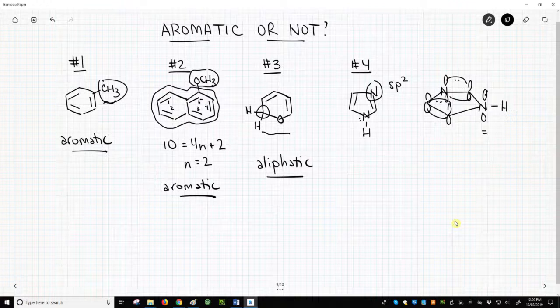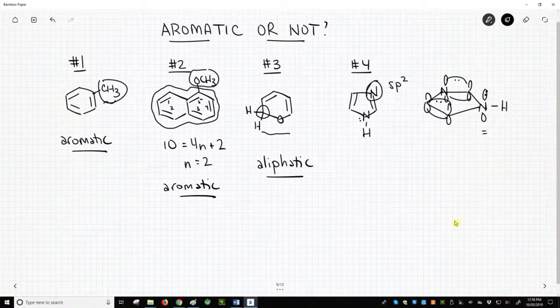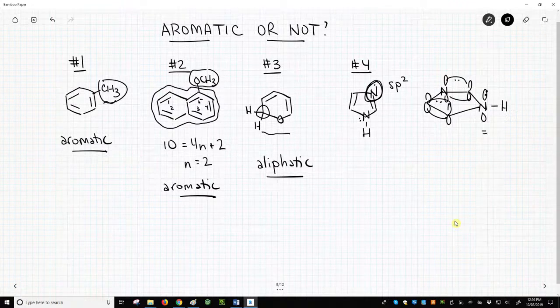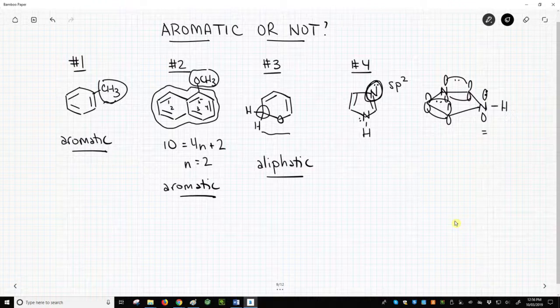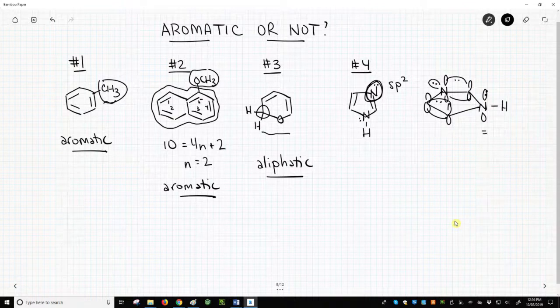Now there is one question. This nitrogen that I've circled up here, it has a lone pair. Where are those electrons in our picture to the right? Well, that lone pair is going to be in an sp2 hybrid. It's perpendicular to the p orbitals.